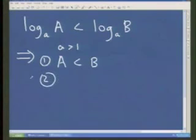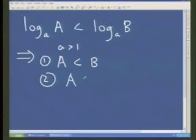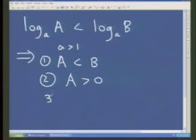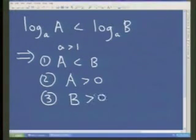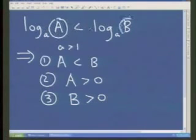Now, what else must be important here in this log inequality? A is less than b. Yes, I have got a is less than b. I have also got to make sure that a is bigger than 0. Are you with me? Yes. A is bigger than 0. Now you are getting there. And I have also got to make b bigger than 0. These are the three things I have got to consider when I do a log inequality.